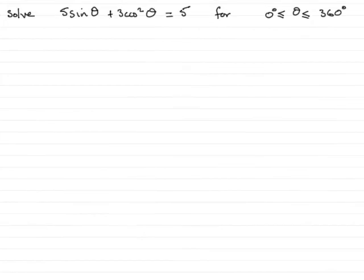Hi, welcome to this tutorial on solving trig equations. In this example, we've got to solve 5 sine theta plus 3 cos squared theta equals 5 for theta greater than or equal to 0 degrees but less than or equal to 360 degrees.